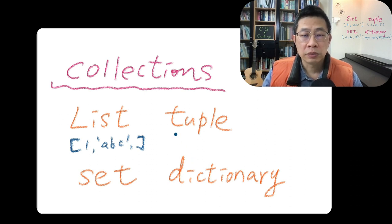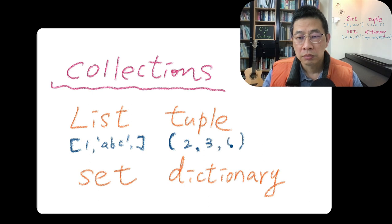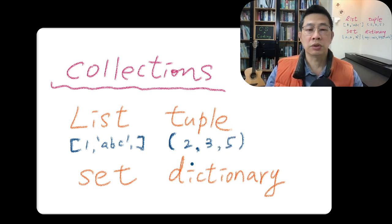And what about a tuple? Tuple uses a kind of round bracket or parentheses. Maybe you do this, two, comma, three, five. Those are the three elements.